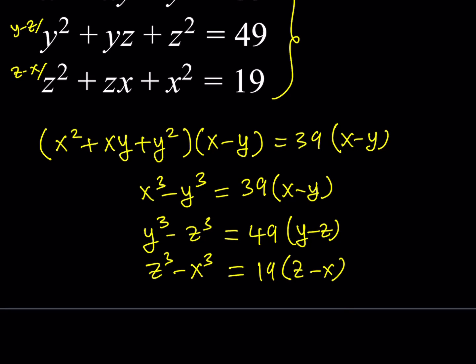Now here's the coolest part. We're going to add these equations after the manipulation. When we add these up, negative y cubed and y cubed cancel to 0; x cubed minus x cubed is 0; z cubed minus z cubed is 0. So the left-hand side is 0. That's the whole purpose — to get a zero on one side so that we can work it out.